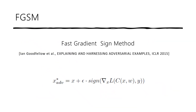The most basic and well-known method among adversarial machine learning is FGSM, short for Fast Gradient Sign Method. It was introduced by Ian Goodfellow et al. in 2015. As the name represents, it's relatively fast to compute and it uses the sign of the gradient, as you can see from the equation below.